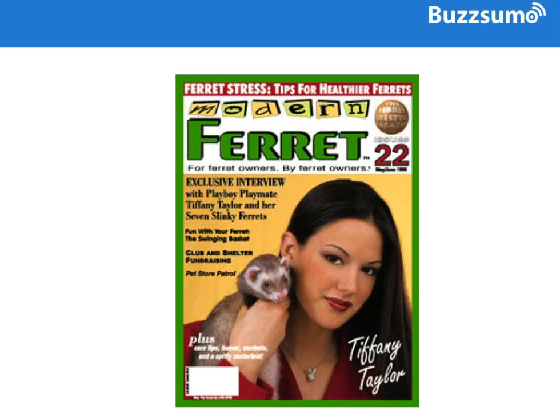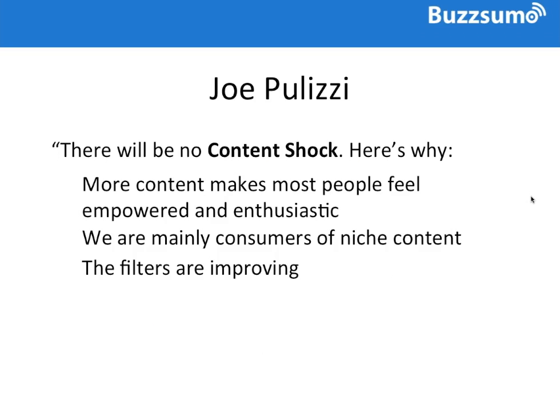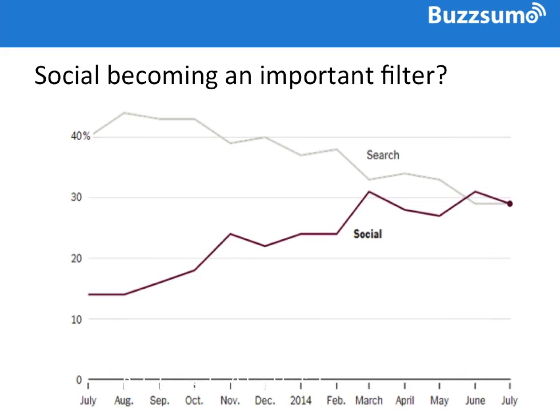Joe uses the example of writing about ferrets — surely content shock doesn't matter in such a niche area? I went to Google and searched for ferrets and found there are actually 21 million articles about ferrets. So even in a niche area there's a huge amount of content. Joe also says content shock is not a problem because people have filters — they can filter down what they want. At one level that's true, but it raises some real questions about social as a filter.